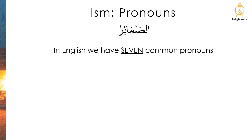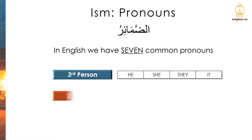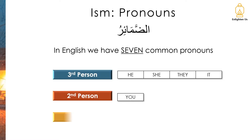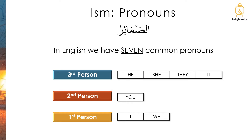Let's remind ourselves of the English pronouns. In English there are seven commonly used pronouns. We have he, she, they, and it when we're referring to the third person. We have you for the second person, and we have I and we.